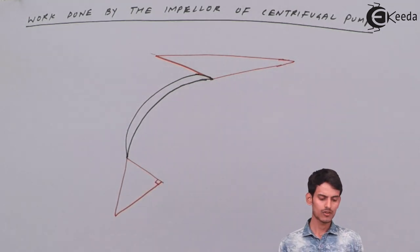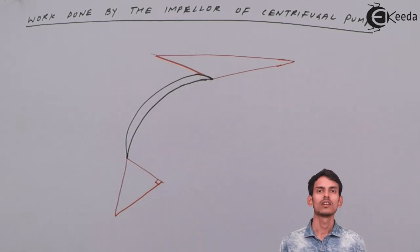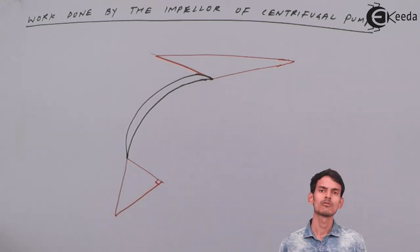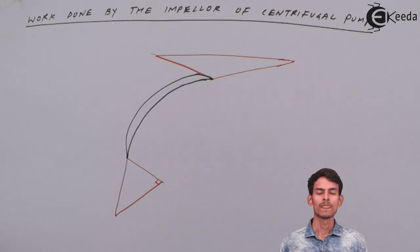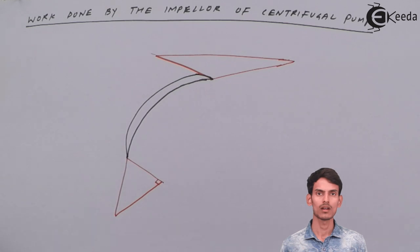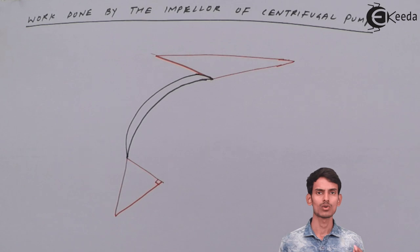I have drawn two triangles: the inlet triangle and the outlet triangle. The inlet side is always radial, so the vectors are perpendicular to each other. If the question states that the outer end is also radial, you need to draw it perpendicular at the outer end as well. Here I'm assuming that the inlet is radial and the outlet is not radial — it has some angle.